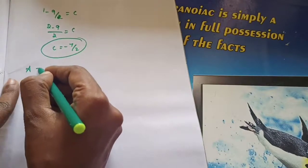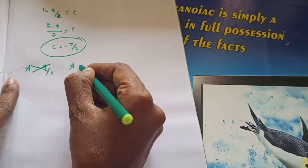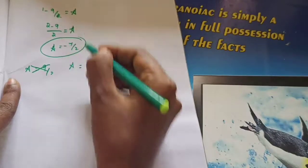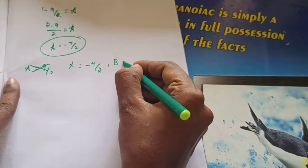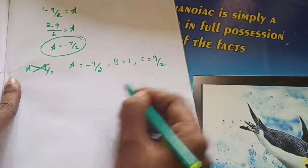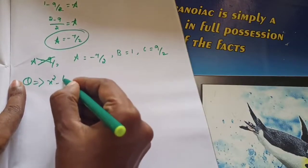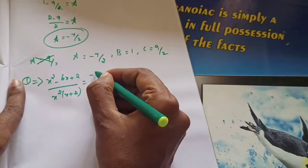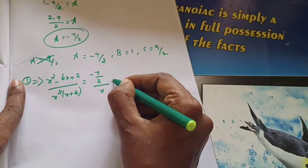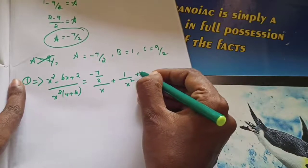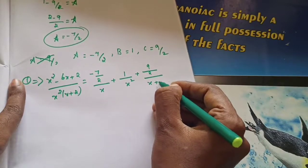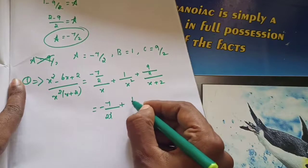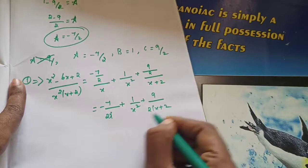Now we have all values: A equals minus 7 by 2, B equals 1, C equals 9 by 2. Substituting in equation number 1: x squared minus 6x plus 2 divided by x squared into x plus 2 equals minus 7 by 2 divided by x, plus 1 by x squared, plus 9 by 2 divided by x plus 2. This is the required answer.